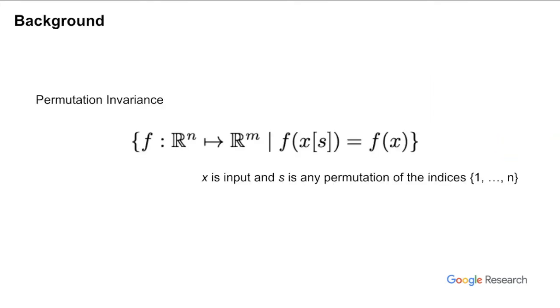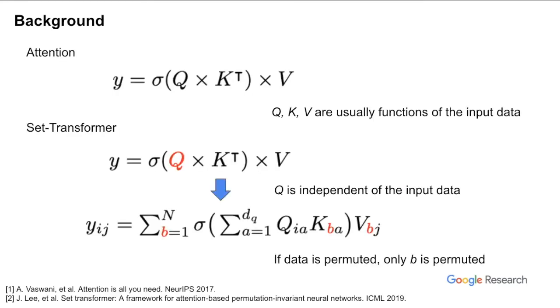Now let me describe in detail how the method works. Mathematically speaking, we are looking for a function f that, for a given input data x, returns identical results no matter how x is permuted. We rely on the attention mechanism to achieve this goal.